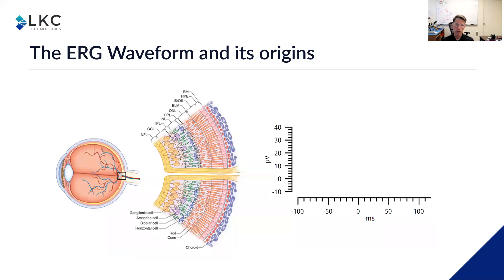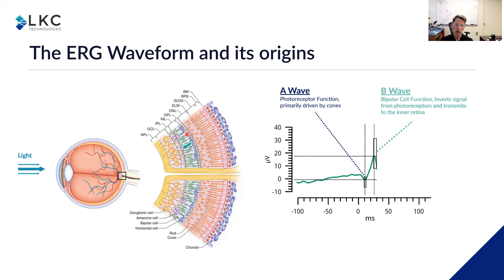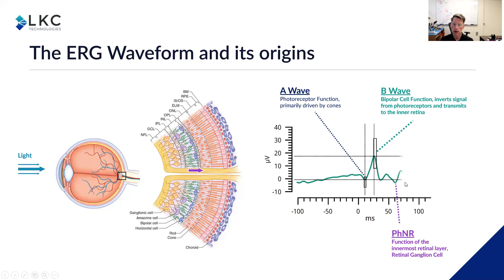A little bit about the ERG waveform and its origins: light comes in and hits the retina, going through to the photoreceptors. This is a time-versus-voltage plot, similar to an electrocardiogram. This first negative deflection is driven primarily by the photoreceptors and also the off-bipolar cells. The photoreceptors pass information to the bipolar cells, which is represented functionally by the B wave — the first positive deflection. Then the bipolar cells pass information to the retinal ganglion cells, producing the photopic negative response, which is this negative deflection here.